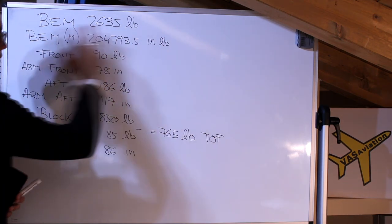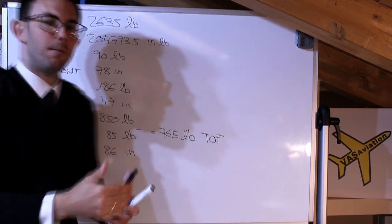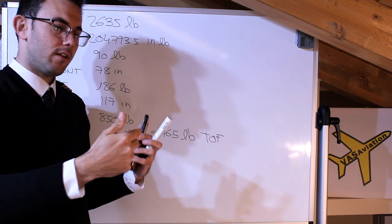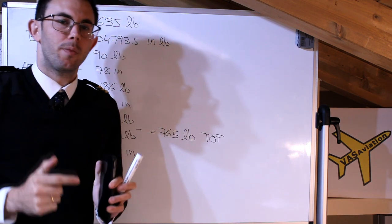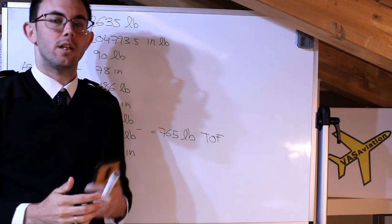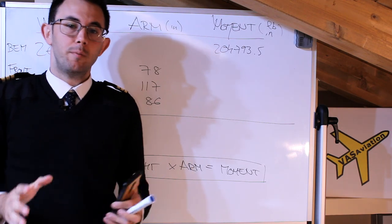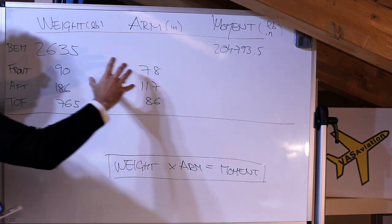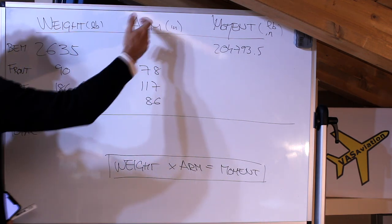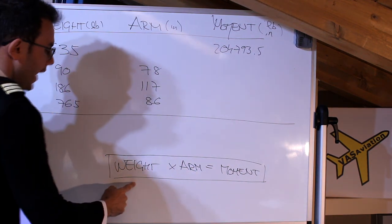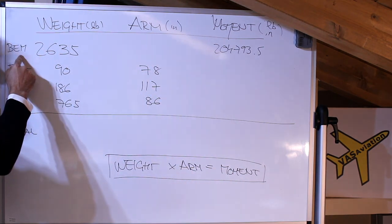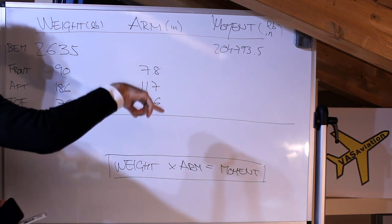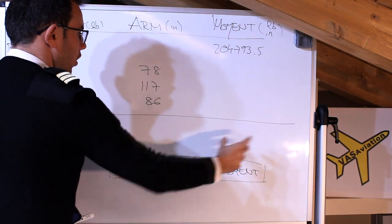Now we can start working the table. We organize weights, arms, and moments — remembering that weight × arm = moment. The manufacturer gives us the BAM weight of 2,635 pounds and its moment of 204,793.5 inch-pounds. The total takeoff mass will be the sum of all quantities: 2,635 plus 90 (front seats) plus 186 (aft seats) plus 765 (takeoff fuel) equals 3,676 pounds.